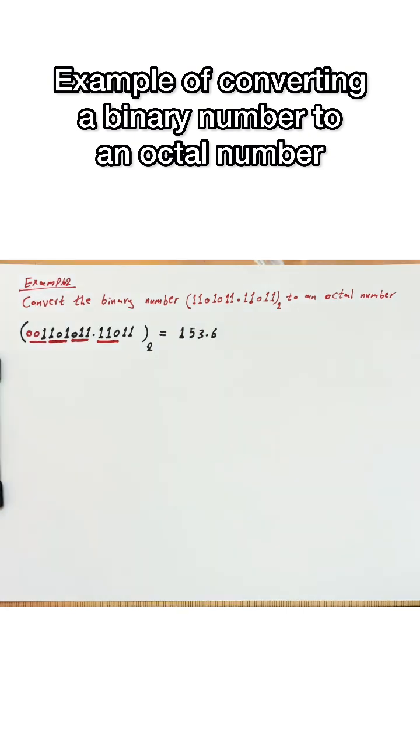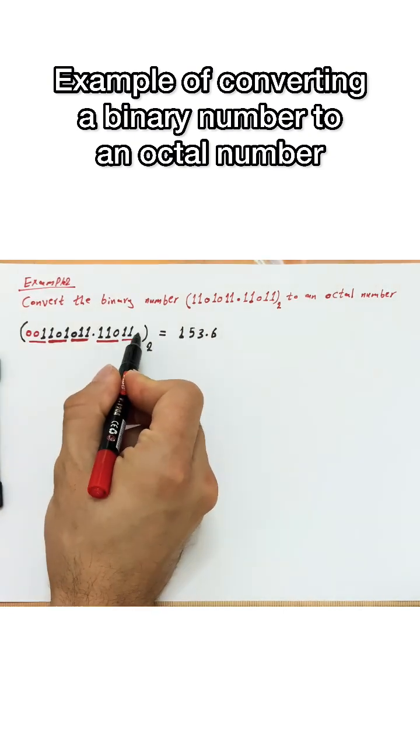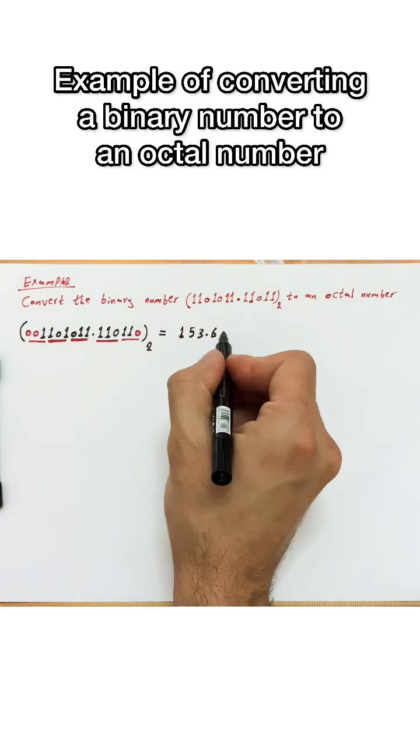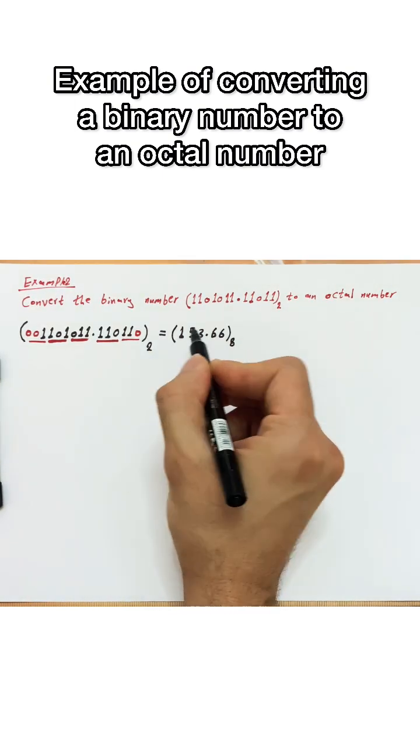Then we take the last group of the number, these two ones, and we will assume there is a zero to the right of them, where this zero is not changing the value of the number. So from the table, this group is equal to 6. So the number is equal to 1.